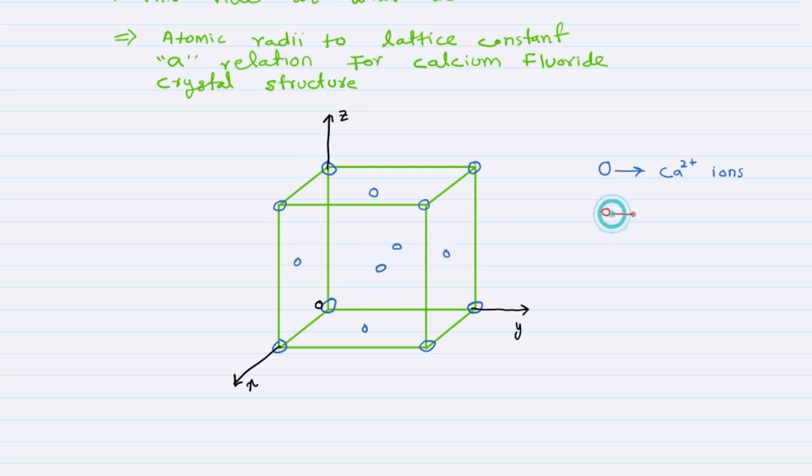The fluoride ions are located at eight tetrahedral positions in FCC. These positions are near each corner inside the cube, but here we will show only one fluoride ion to make things clear.